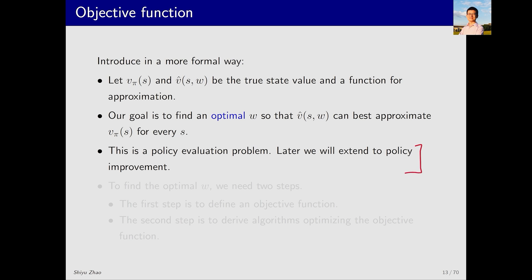This is similar to the TD algorithms we introduced in the last lecture. Our goal is to find the optimal w. How to do that? There are two steps. The first step is to define the objective function and the second step is to optimize this objective function. So, let's first look at how to define the objective function.